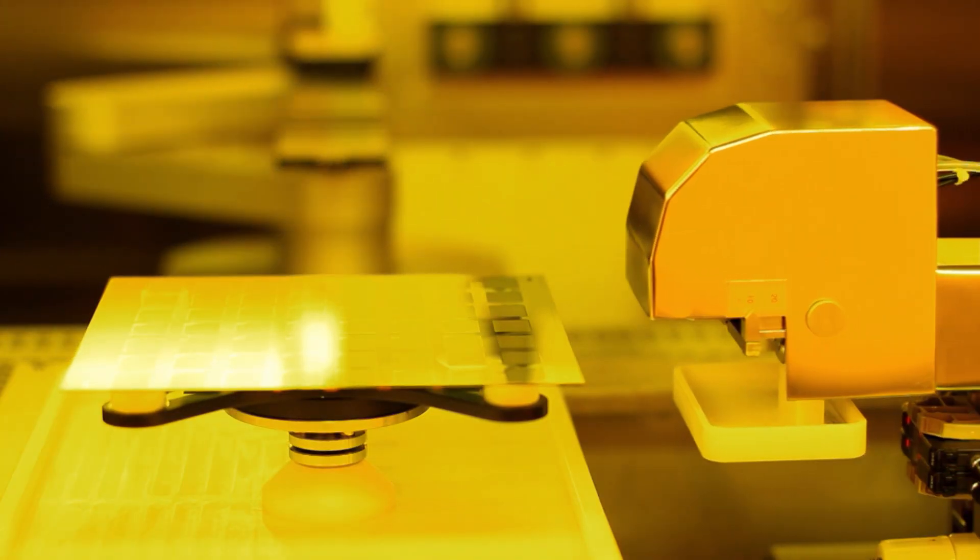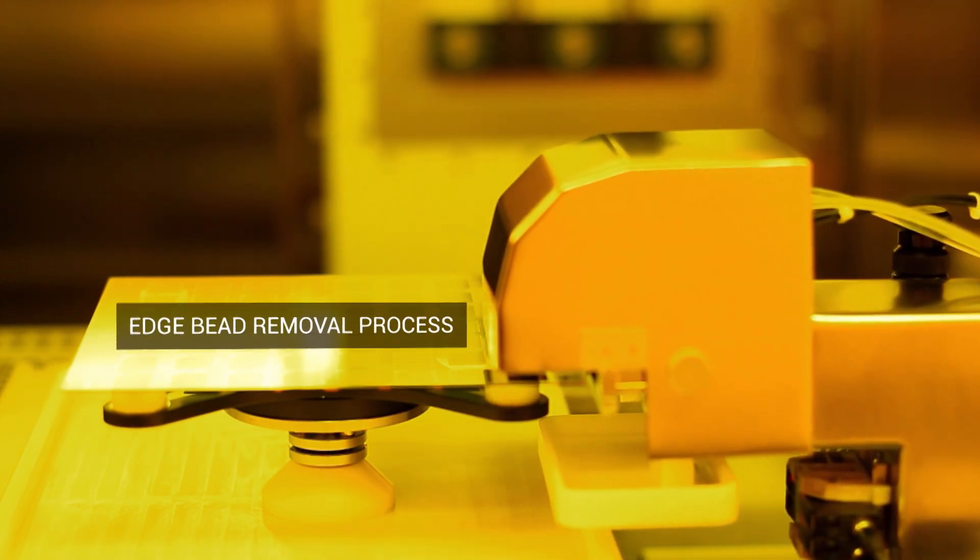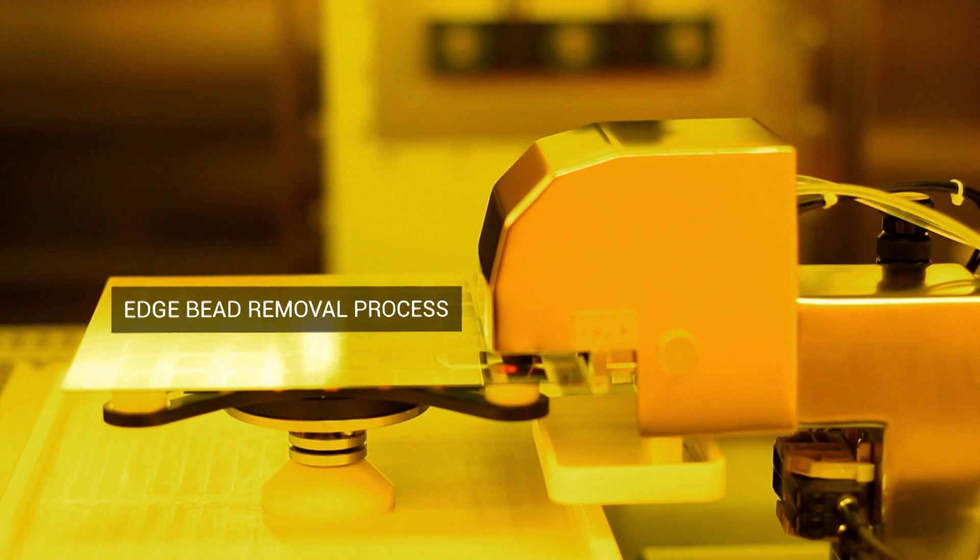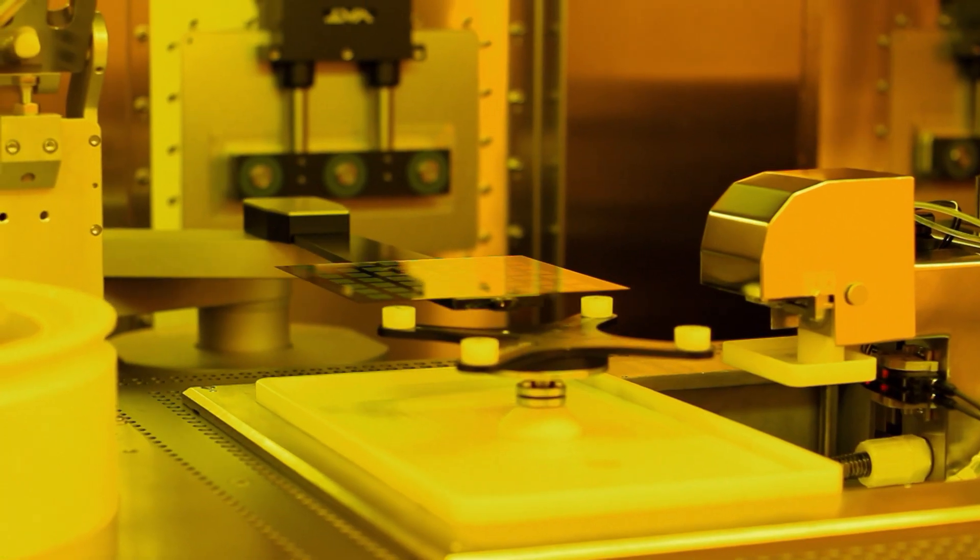Edge bead removal allows the edge coating to be removed over a predefined area, as specified by the device design. Precise positioning of the fluid nozzle controls the removal of both aqueous and solvent-based materials, maximising the active area of the device.